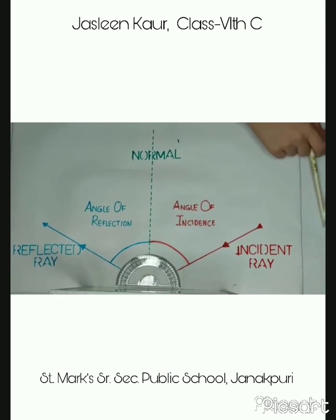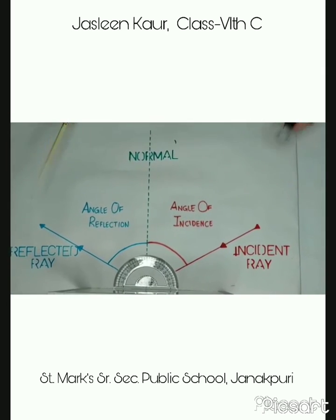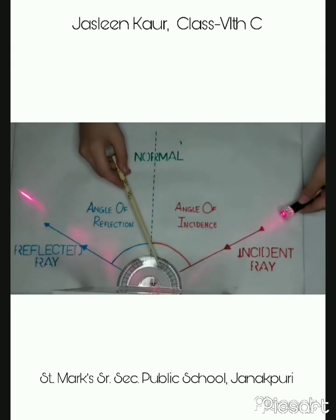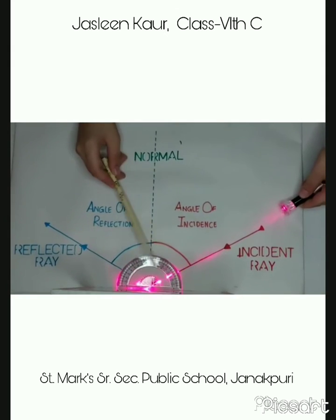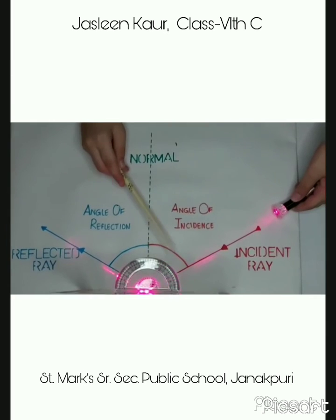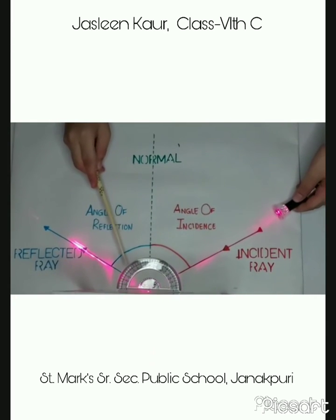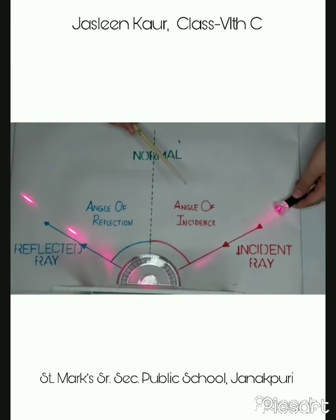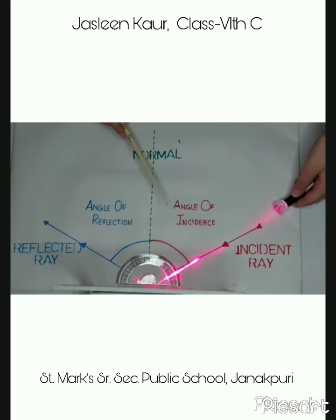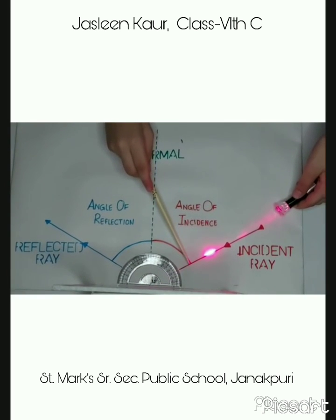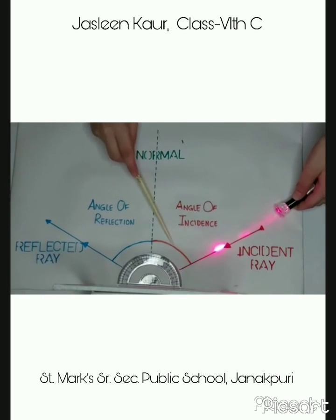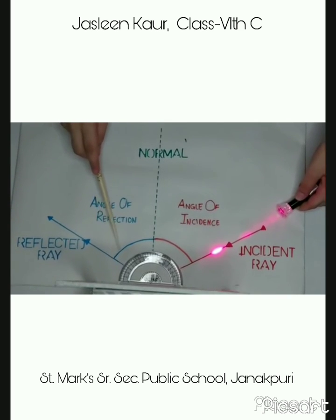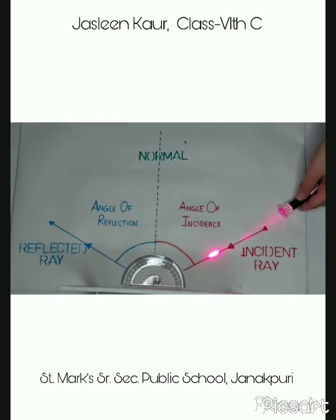Let us demonstrate. If I throw the light at 30 degrees, it will reflect back at 30 degrees only. That means if the angle of incidence is 60 degrees, then the angle of reflection would also be 60 degrees.